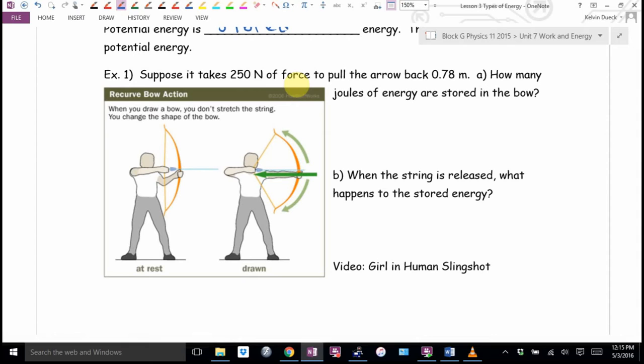Suppose it takes 250 newtons of force to pull the arrow back 0.78 meters. What does part A want me to find? Joules of energy are stored in the bow. Well, what else is measured in joules? I'm going to go force times distance. Did they tell me how many newtons of force it took to pull back on this? 250 newtons. How far back did we pull the bow? 0.78 meters. For a big compound bow, that's about right. How many joules of energy, first of all, how much work did we do on the bow? How many joules of energy is the bow now storing? Same question, same answer.